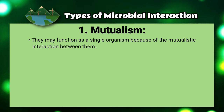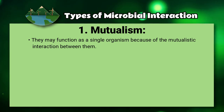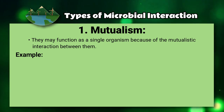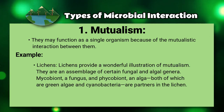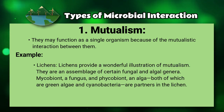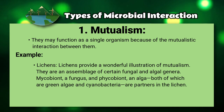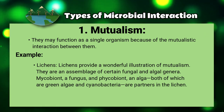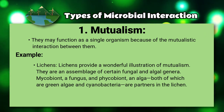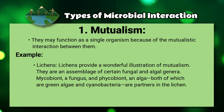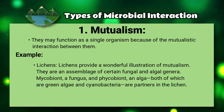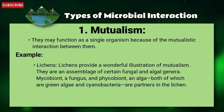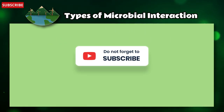The organisms may function as a single organism because of their mutualistic interaction. One example is lichens, which provide a wonderful illustration of mutualism. They are an assemblage of certain fungal and algal genera — mycobiota (a fungus) and phycobiota (an alga) — both of which include green algae and cyanobacteria as partners in the lichen.